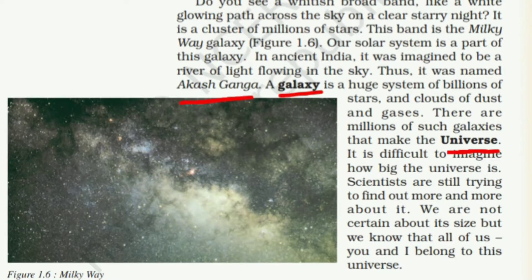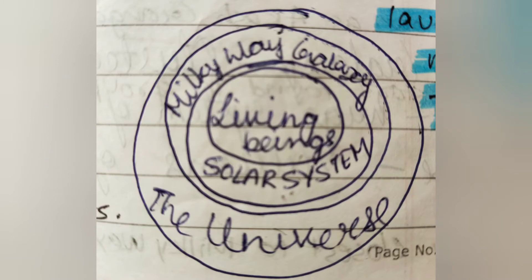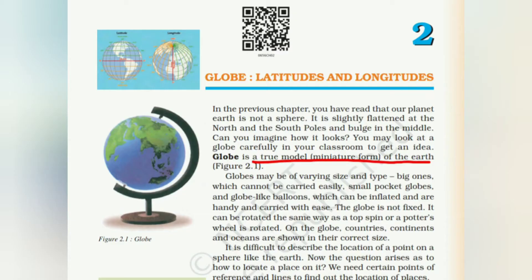We also have the galaxy — Akash Ganga — and the universe concept, which a figure in the book clarifies. That concludes Chapter 1. It was easy and took just about two minutes. The advice here is: don't start making notes or mugging things up — figure out what's important and what's not, and evaluate accordingly.